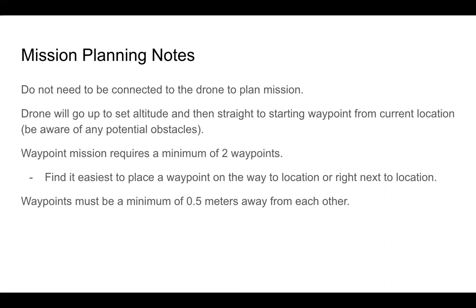When you execute the waypoint mission, the drone is going to go up to a set altitude that you've predetermined, and then it's going to go straight to the starting waypoint from its current location. Be aware of any obstacles between the starting location of the drone and the first waypoint — it goes up and straight over. Waypoint missions require a minimum of two waypoints, so you do have to place two waypoints.